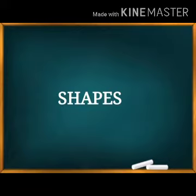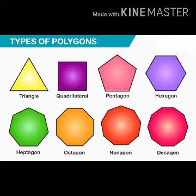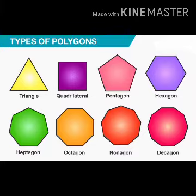Our first topic is shapes. We already know about geometrical shapes, so let's recall them. These are some types of polygons: a 3-sided shape is called a triangle, 4-sided is a quadrilateral, 5-sided is a pentagon, 6-sided is a hexagon, then heptagon, octagon, nonagon, and so on. Geometrical shapes with 3 or more sides are generally called polygons.